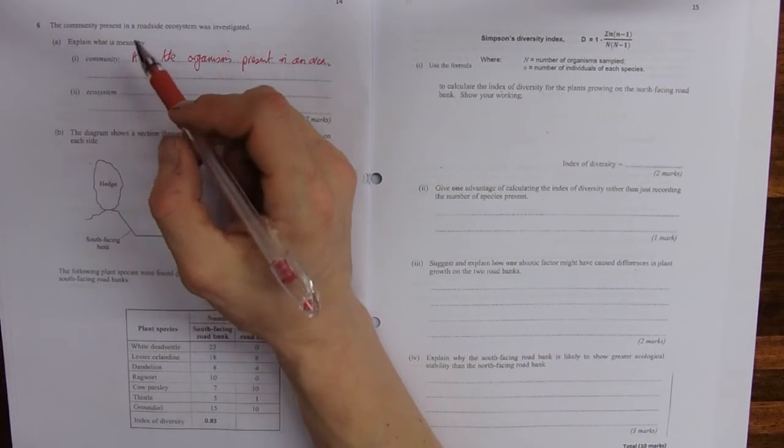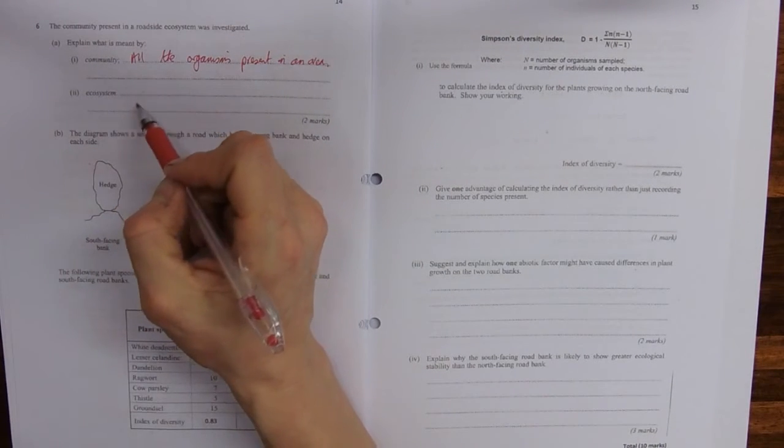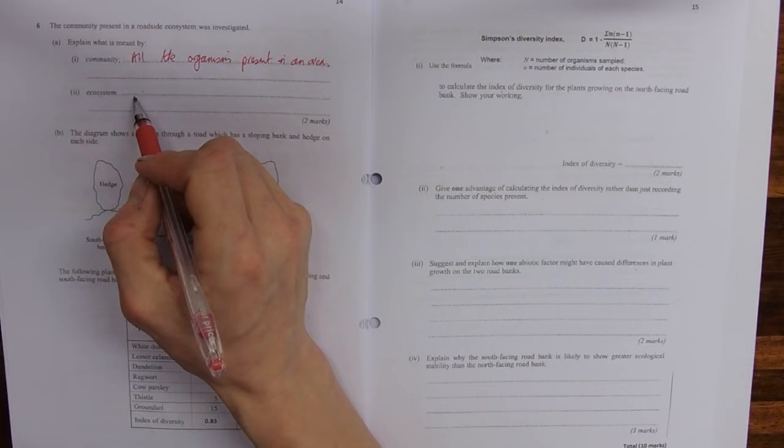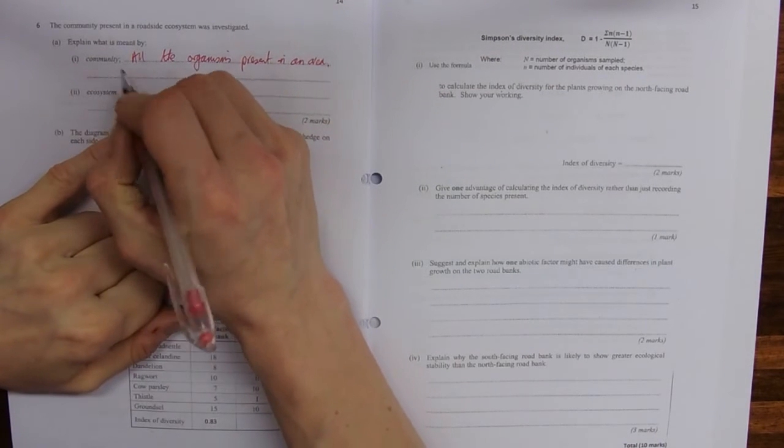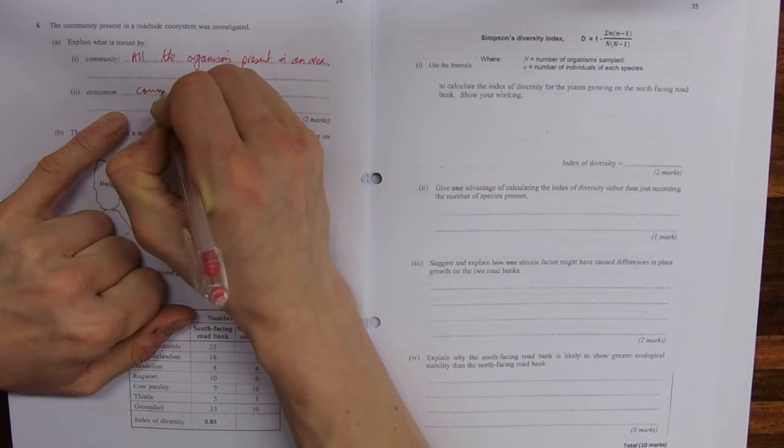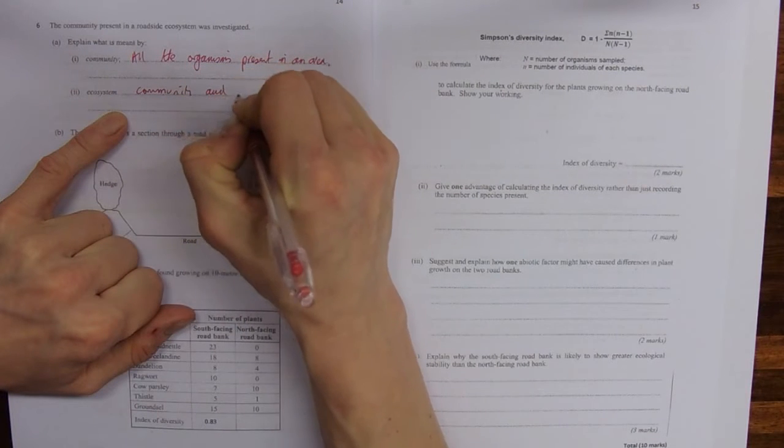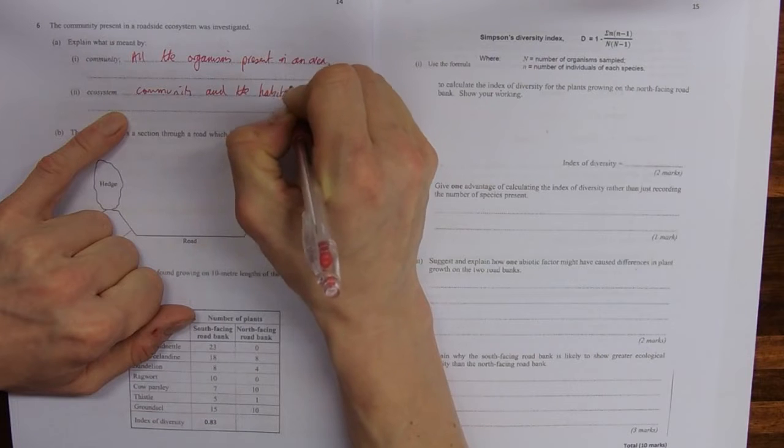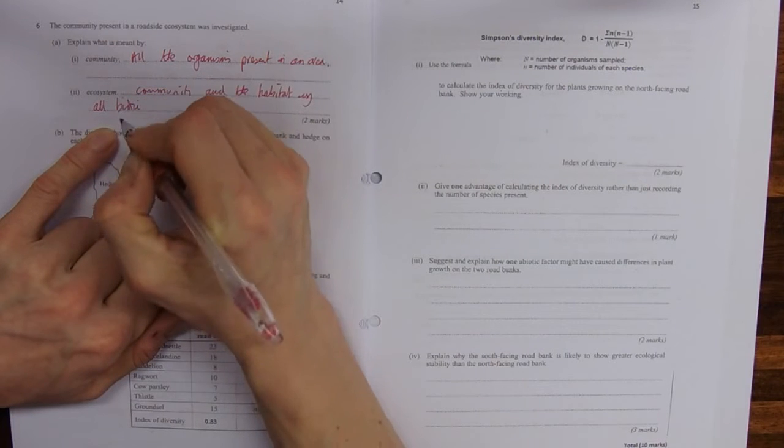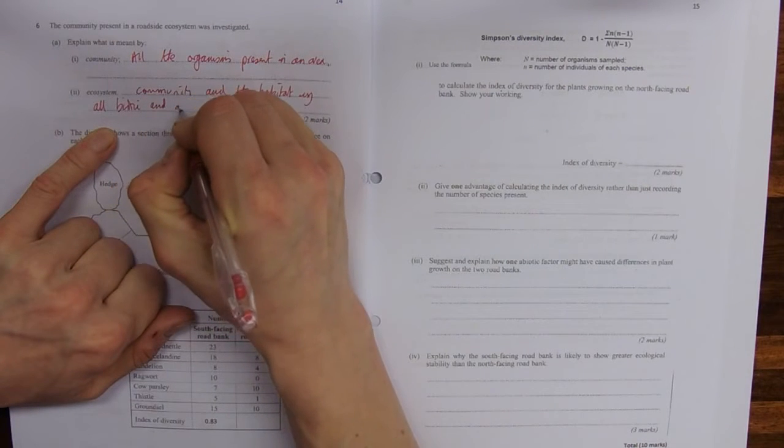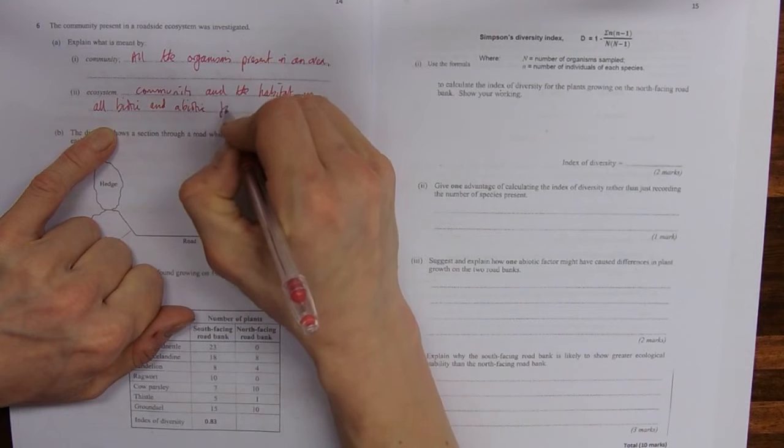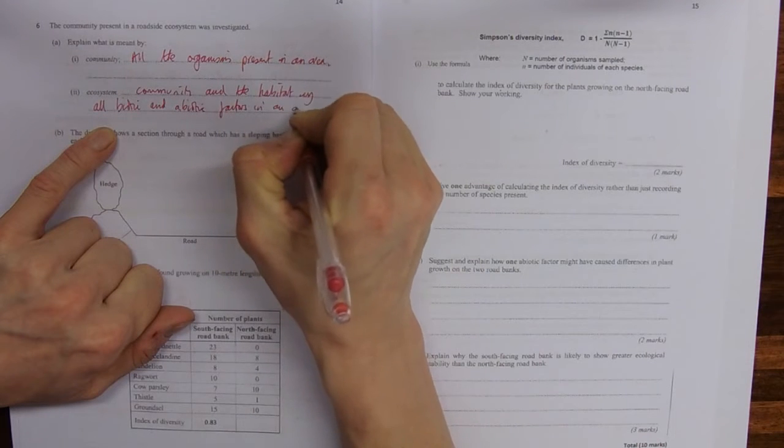And ecosystem, well it's all the organisms and how they interact with all the biotic and abiotic things. So like sunlight and water and each other, that sort of thing. So it's the community and the habitat. For example, they're all biotic, so living things, and abiotic, non-living things in an area. So factors in an area.